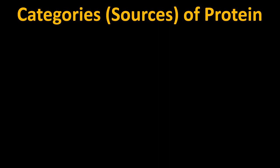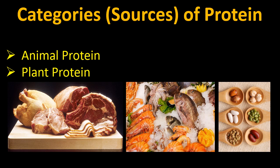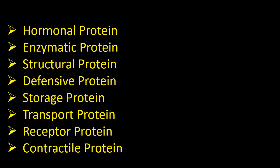We can get protein from both resources — animal protein as well as plant protein. Animal protein is found in meat, and plant protein is found in cereals. So we can get protein by both means.